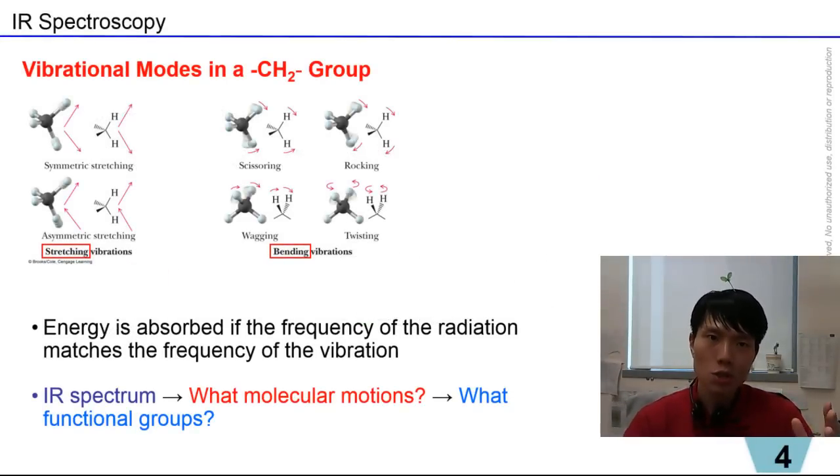So what are the kinds of vibrations we experience in the molecule? Let's take a look at CH2 group here. In general, for IR spectroscopy vibrational modes, there are mainly two kinds. One is stretching, the other one is bending. In the following clip, I'll be demonstrating to you myself physically what these are.